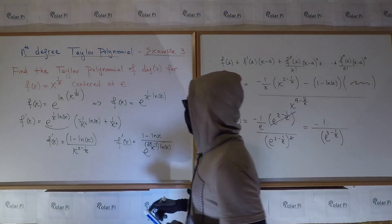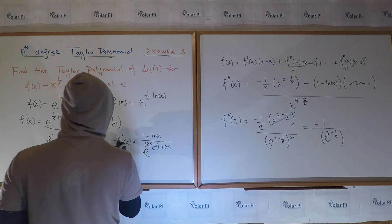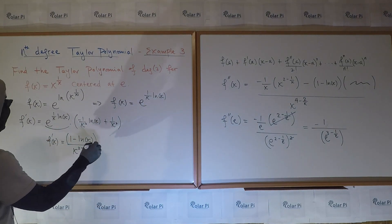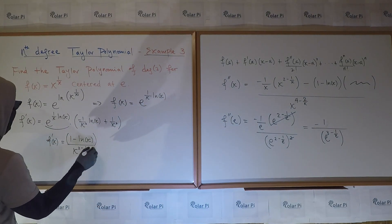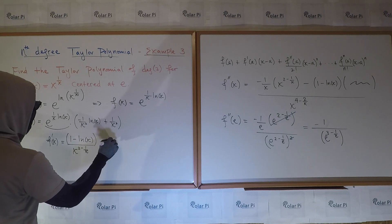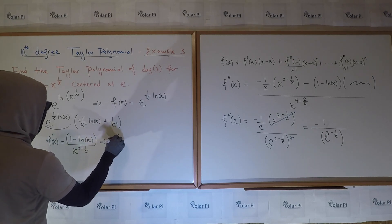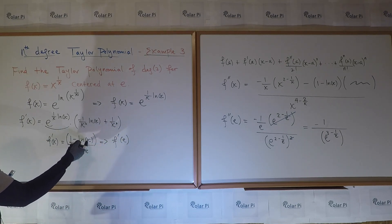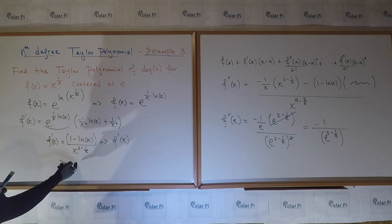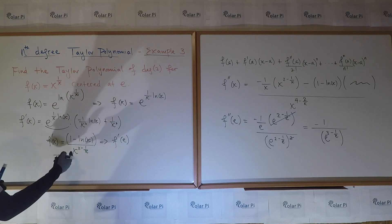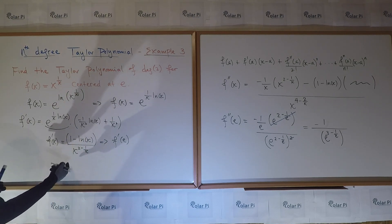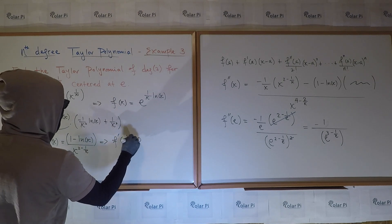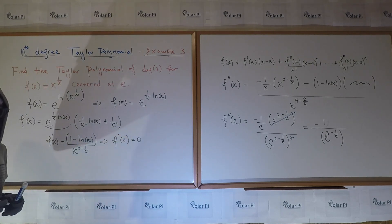The first derivative evaluated at e is not as difficult. f prime of e is going to be 1 minus ln of e, that's 0, over who cares what the denominator is as long as it's not 0 — and it's clearly not 0. So the first derivative evaluated at e is 0.